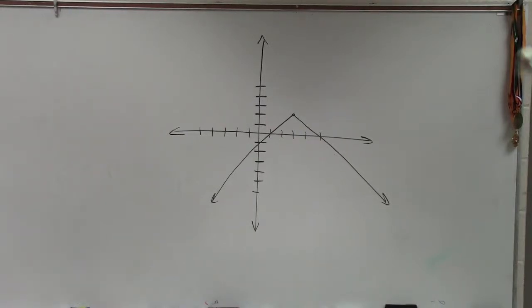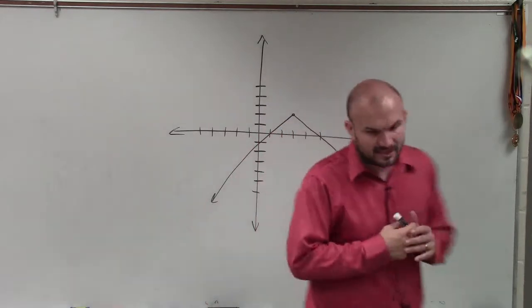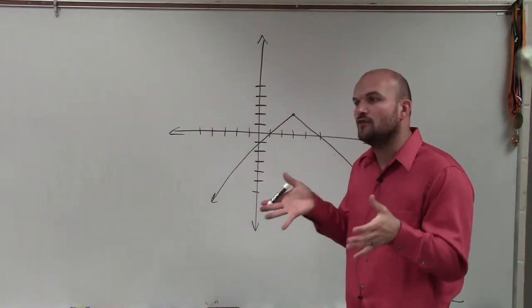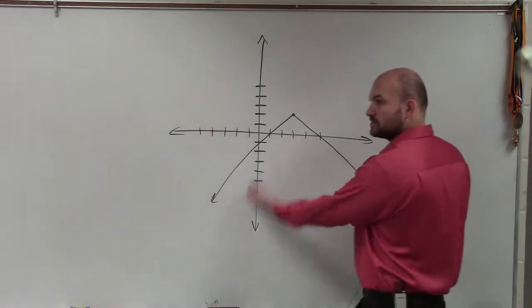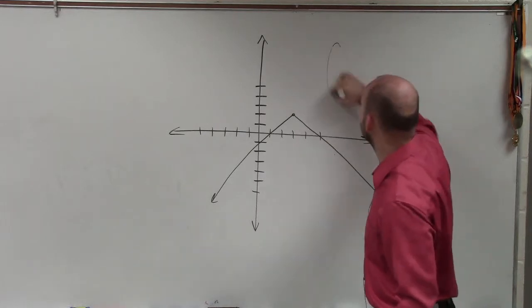I'll go over it. So on domain, Savannah, what they're asking us to do is domain is asking us, what is the set of all x values that are a part of this graph? OK? Now, previously, when we were looking at, we just kind of did like mapping feature.